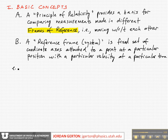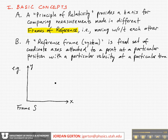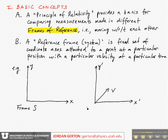As an example, we can draw one coordinate system with a Y and an X axis, and we can call this frame S. We can also draw another coordinate system, this time giving primes to the coordinate axes. This coordinate system is going to be traveling with a velocity V with respect to frame S. We'll call this frame S prime, and it is moving with velocity V with respect to frame S.